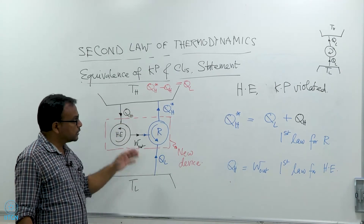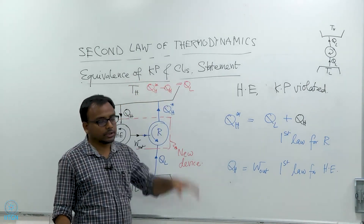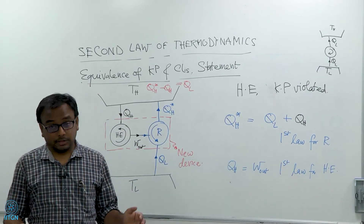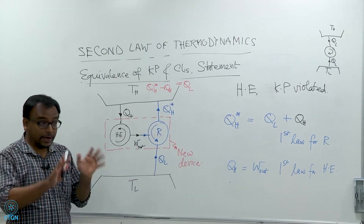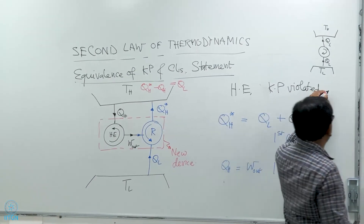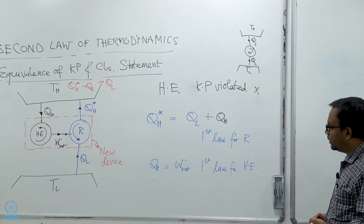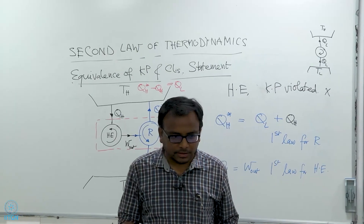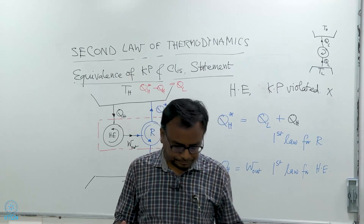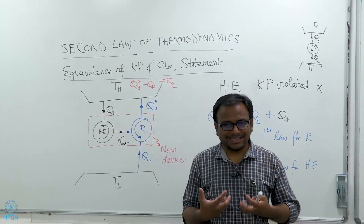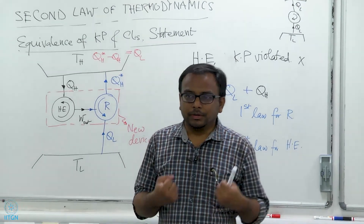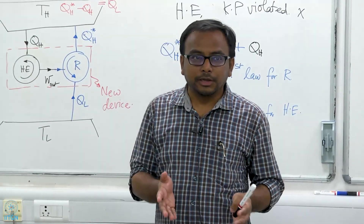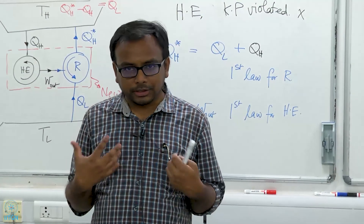This exercise proves that the Kelvin-Planck statement and the Clausius statement are really equivalent — if one is broken, the other will also be broken. And of course, the point is they cannot be broken. These statements are really equivalent, meaning they are two different representations of the same physical fact — just two different ways of stating the second law of thermodynamics, but they eventually spell out the same fact.